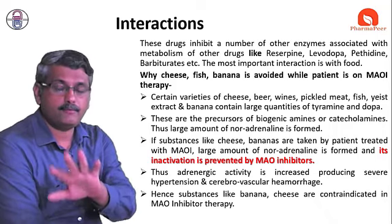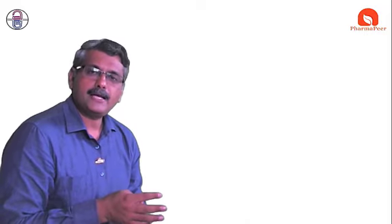To summarize this chapter: we covered what depression is, what the treatment for depression is (antidepressants), the different classes of antidepressant drugs, the different mechanisms of antidepressants, the pharmacological actions of antidepressant drugs, possible adverse effects, drug interactions, why certain drugs need dose tapering with MAO inhibitors, and why patients on MAO inhibitors must reduce consumption of tyramine and DOPA-containing foods such as cheese, banana, and fish.